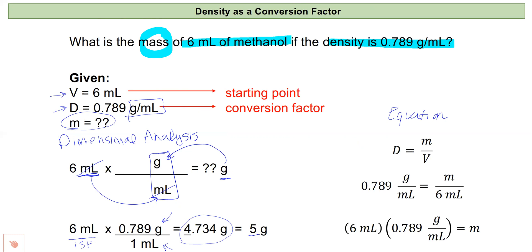So this is using density like a conversion factor. I can also just plug into the equation for density. I know density and I know volume so I can plug those in here: 0.789 grams per milliliter for density and six milliliters for volume, and then solve for mass. I'll do this by multiplying six milliliters on both sides of the equation so they cancel on the right-hand side and I isolate mass. Then six milliliters times the density will give me mass, which will be five grams again.